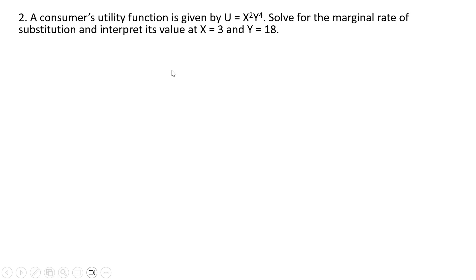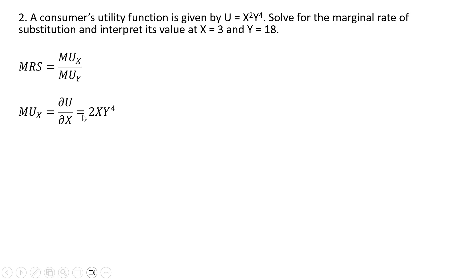Problem two. A consumer's utility function is given by the following. We're going to solve for the marginal rate of substitution and interpret its value at x equals 3 and y equals 18. The marginal rate of substitution is the marginal utility of good x divided by the marginal utility of good y. To get the marginal utility of good x, we take the partial derivative of the utility function with respect to x. We bring down the 2 in front of x squared, subtract 1 from the exponent, leaving us with 2x, and we don't do anything with y to the fourth power.